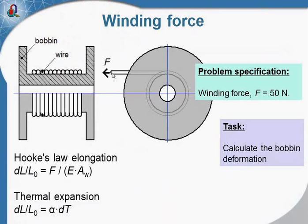The winding force leads to wire elongation. And after the force is removed, the wire shrinks and squeezes the bobbin. Our task is to calculate the bobbin deformation.